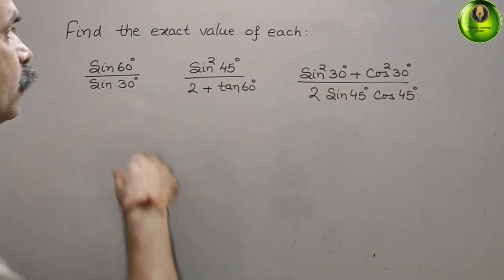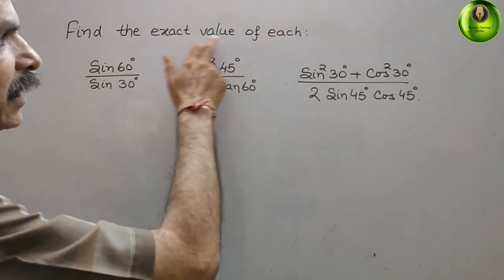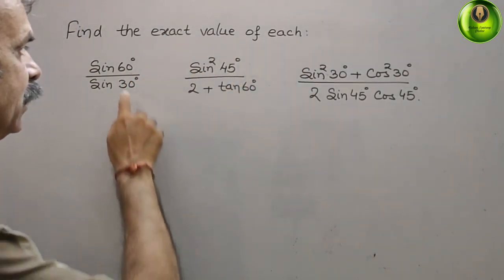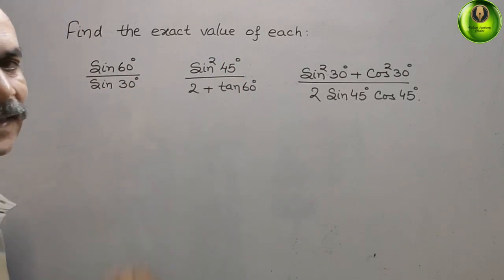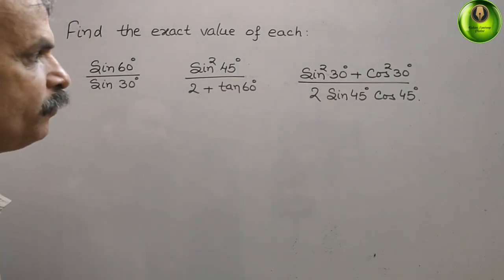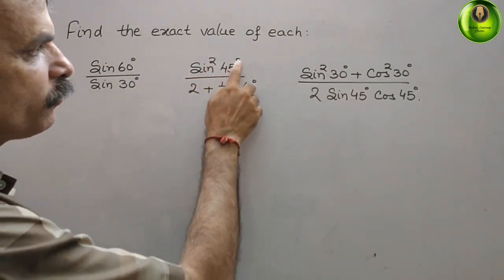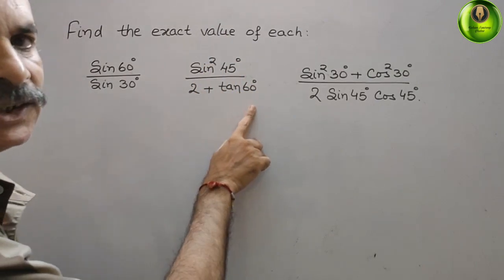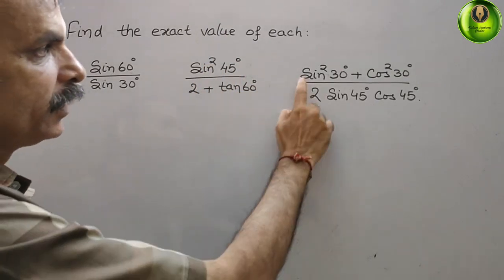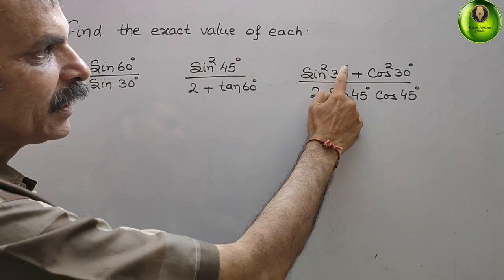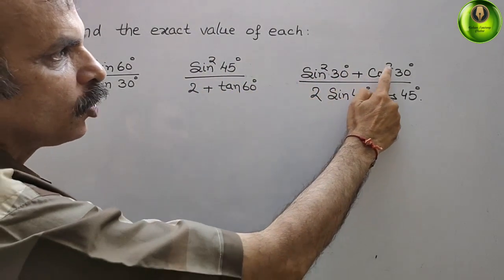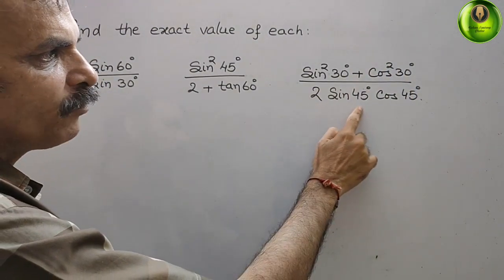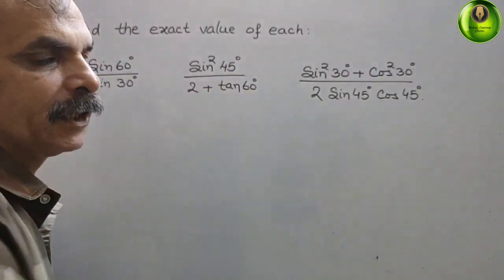Next question: find the exact value of each. See what they have given — sin 60 degree by sin 30 degree; sin square 45 degree by 2 plus tan 60 degree; sin square 30 degree plus cos square 30 degree by 2; sin 45 degree cos 45 degree.